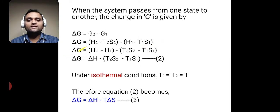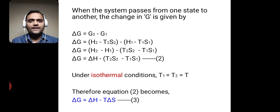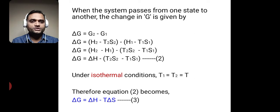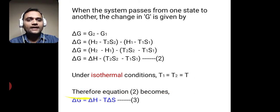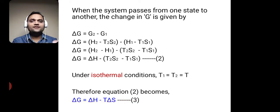Delta G equals (H2 minus T2 S2) minus (H1 minus T1 S1). So we get delta G equal to delta H minus the second bracket. Under isothermal conditions, T1 equals T2, so it equals T because temperature remains constant. Therefore, equation 2 becomes delta G is equal to delta H minus T delta S. This is our third equation.